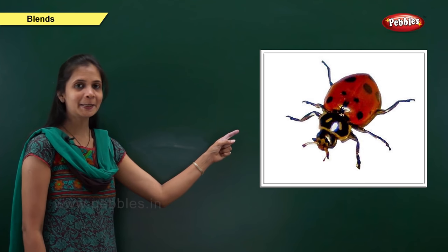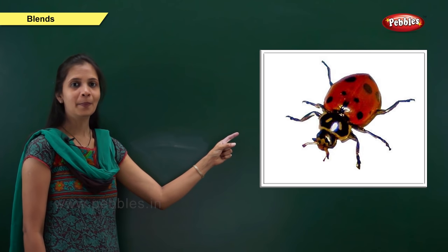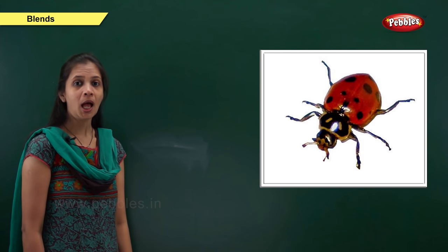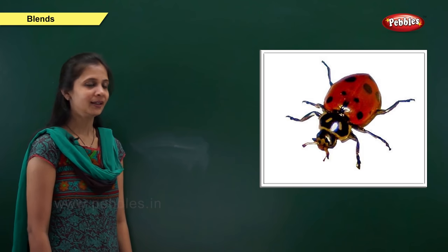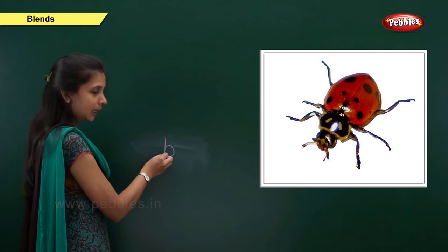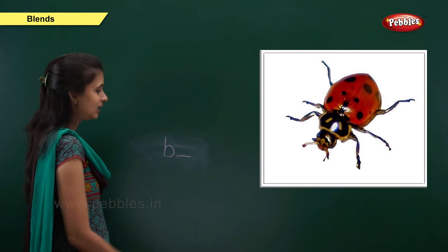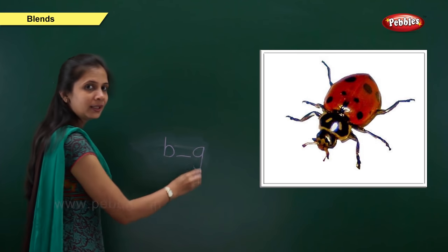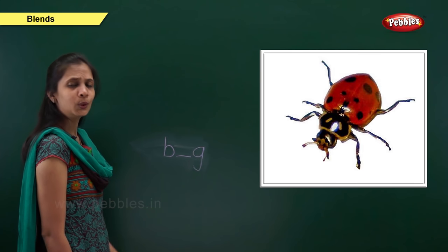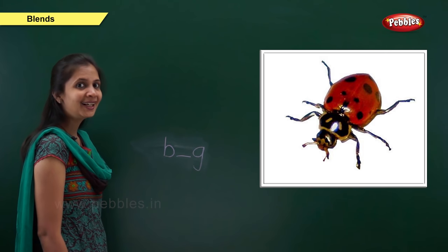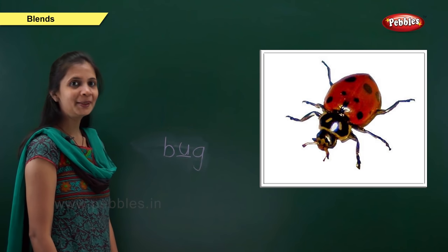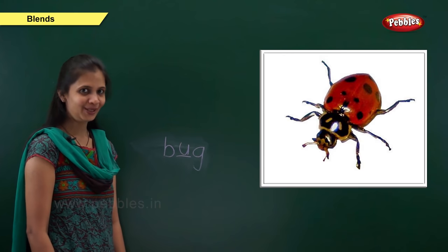Next one. Which picture is this? Yes, it is bug. What is the sound of it? It is ba, a, ga. When the sound is 'ba', the letter is b. When the sound is 'ga', the letter is g. What about the middle sound? Ba, a, ga — a. Which vowel? It is u. So: b, u, g — bug.